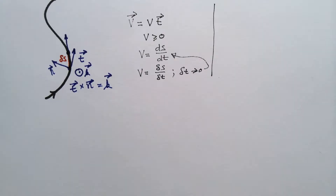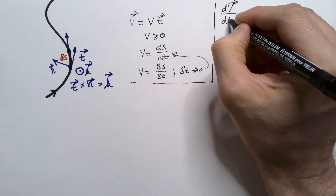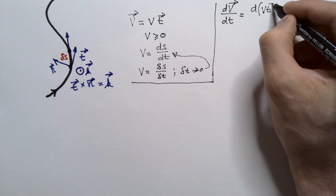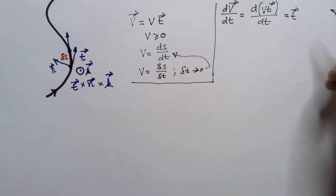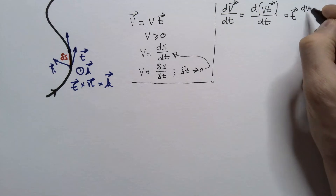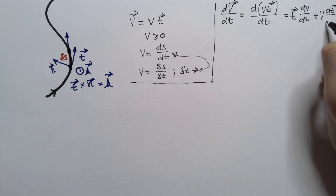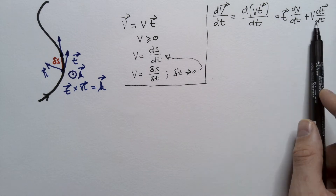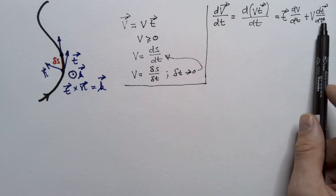The next question is how do we find acceleration in this coordinate system? Acceleration is dv/dt, which equals d(vt)/dt. Using the product rule for differentiation, this gives t·(dv/dt) plus v·(dt/dt). We already know how to handle the first term, so let's investigate how to handle dt/dt.